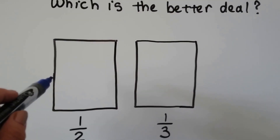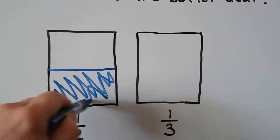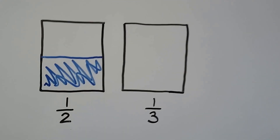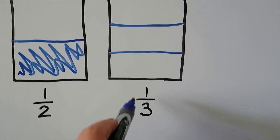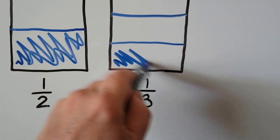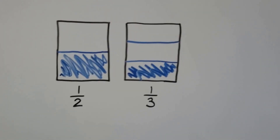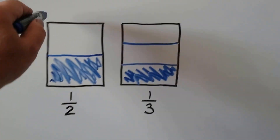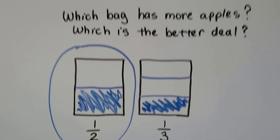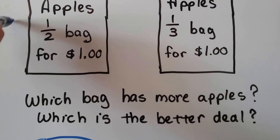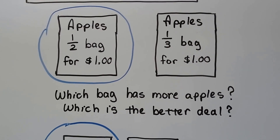Where would we draw the line for a half bag? A half bag would be this much — there'd be this many apples in the bag. How about one third? That means there are three equal parts, so we draw three equal parts, and one third is only one of them — only this much. They're both a dollar, so which one gives you more apples? The one with half a bag — half is more than a third. Half of a bag for one dollar is more apples than one third of a bag for a dollar.